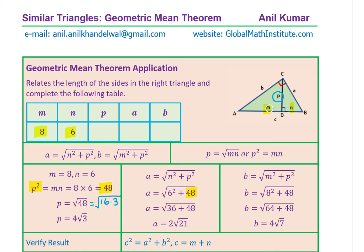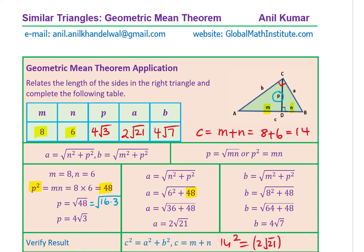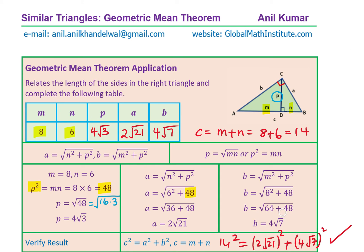We found P, A, and B. It's a good idea to verify the result. C equals M plus N equals 8 plus 6 equals 14. Now check: is 14 squared equal to A squared plus B squared? A squared is the square of 2 square root 21, and B squared is the square of 4 square root 7. If you verify, yes it works out. I hope you have understood how to solve questions related to the altitude length and the two segments of the hypotenuse.